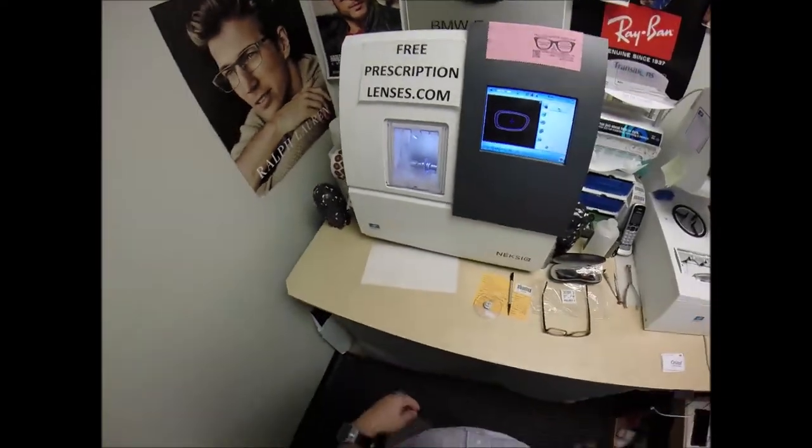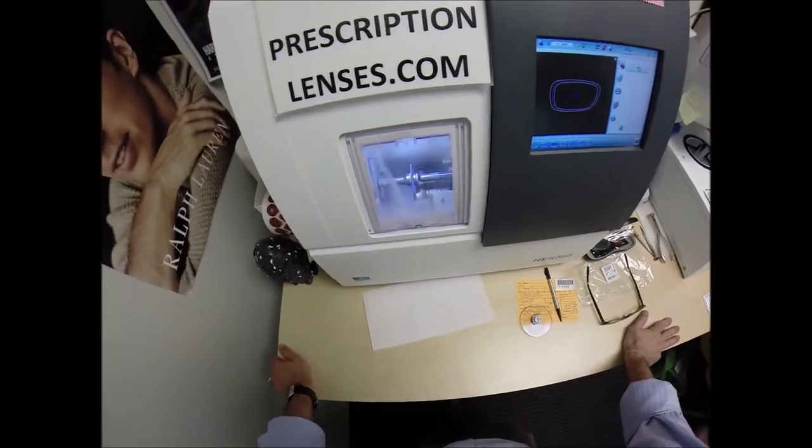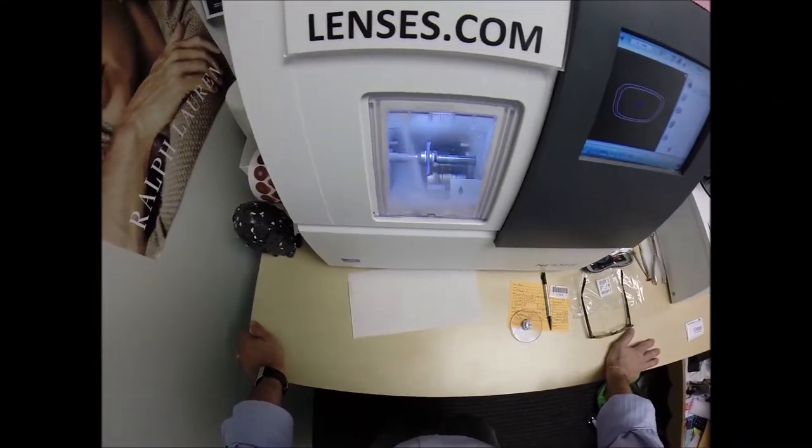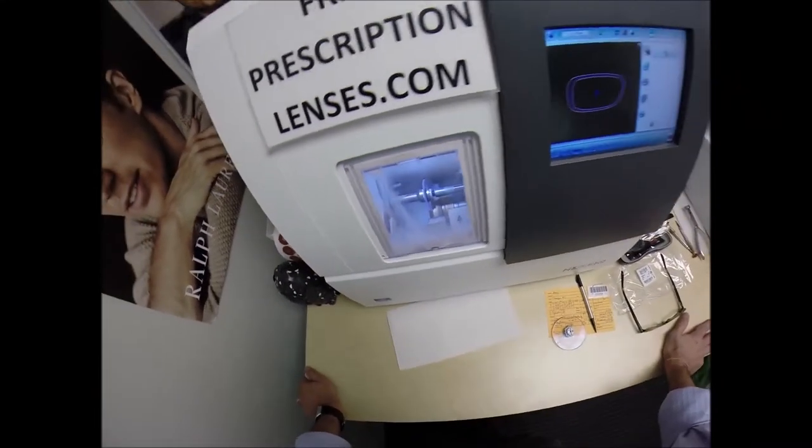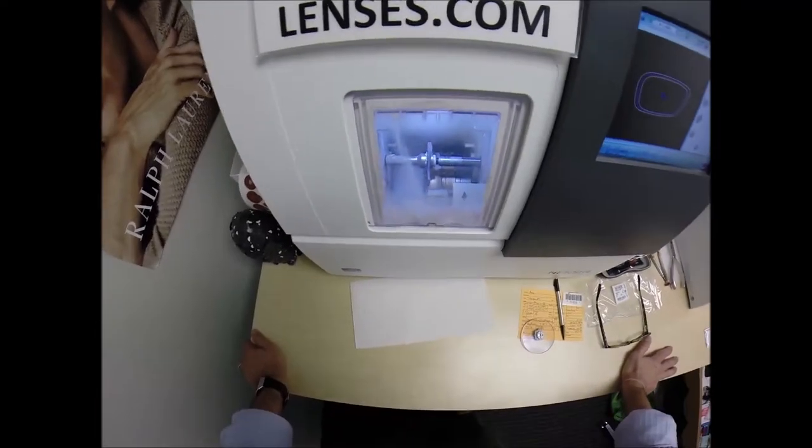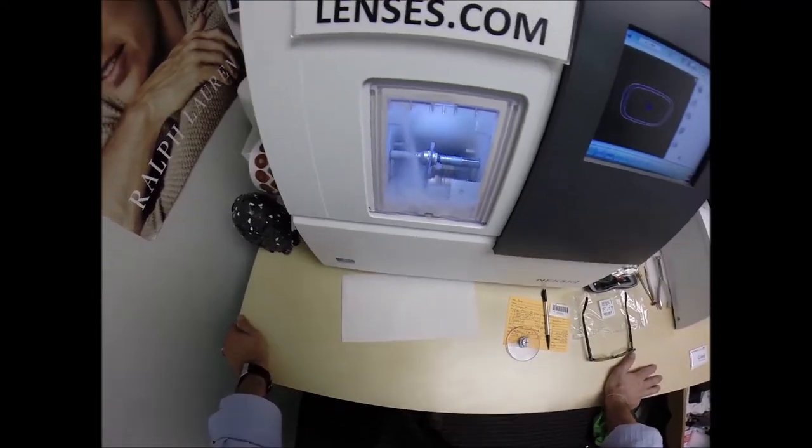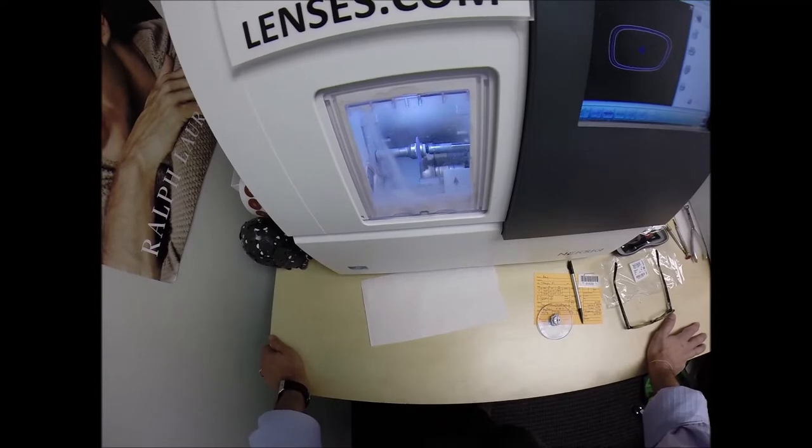It also has 100% UVA and UVB protection built into the lens. We know what the sun's harmful ultraviolet rays can do to your skin, where your eyes are on are eight times more sensitive to UV light than your skin.